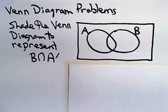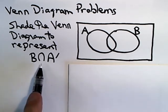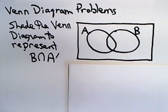This problem with the Venn diagram says to shade the Venn diagram to represent B intersect A complement. I'm going to show you two ways to do it. The first way is not really the way I would do it, but I want to give you some options.